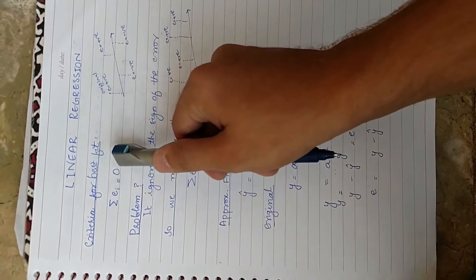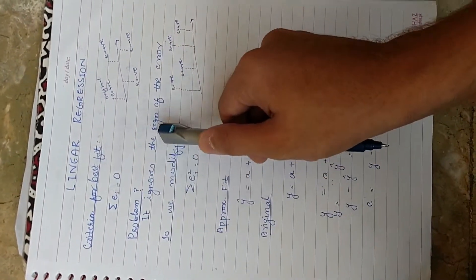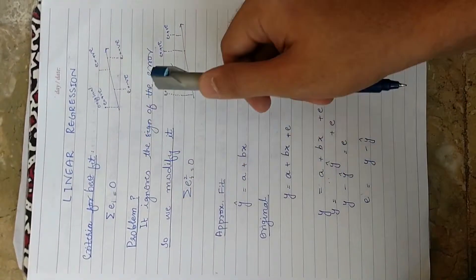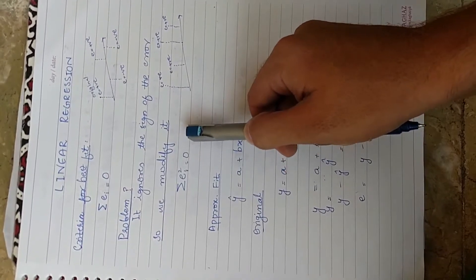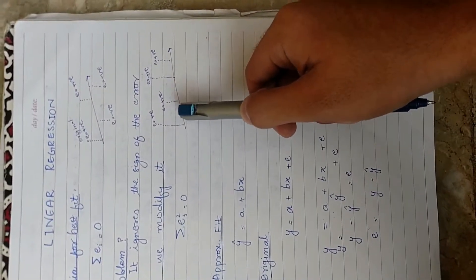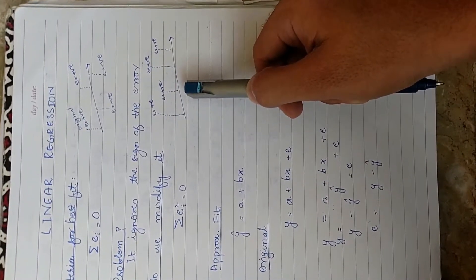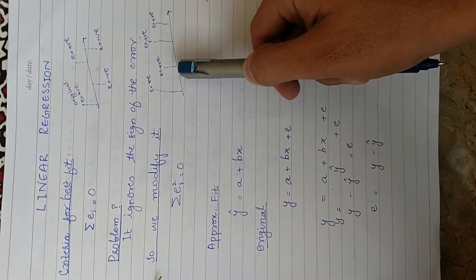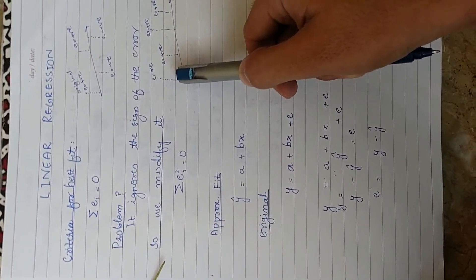This particular formula ignores the sign of the error, so we modify the formula. Now this formula is summation of error squared equals zero, which in turn gives us this. The negative signs are now gone, and we don't have to worry about that because the value here has doubled.